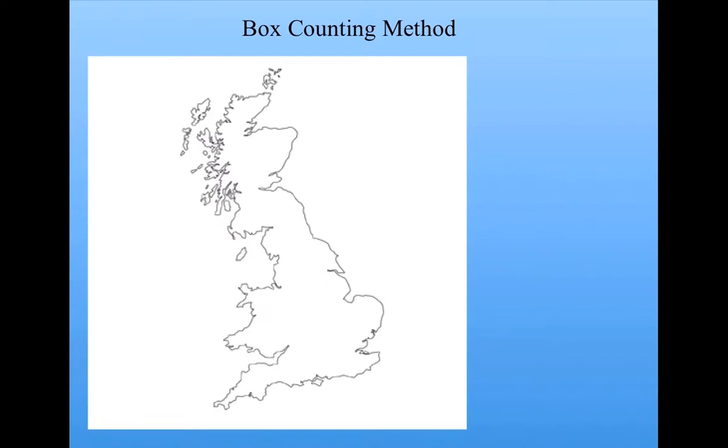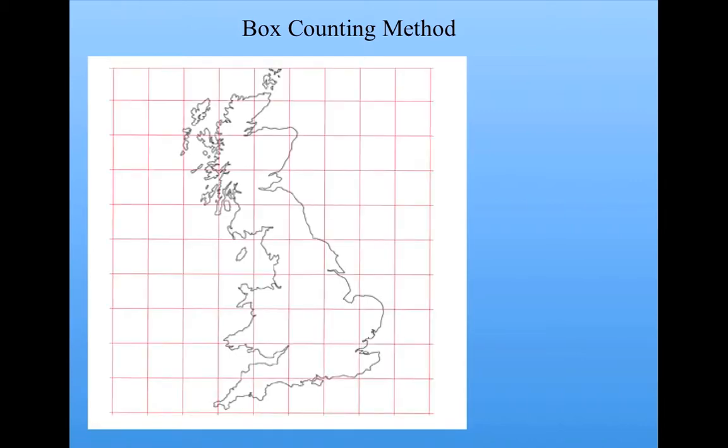So here's what the box-counting method consists of. You take a particular object. Here I have a picture of the British coastline. What we do is we overlay this figure by a grid of boxes. Each box has a certain length of its side, which is the scale at which we're measuring this figure. And what we do is we count the number of boxes in which part of the black outline of the coast appears.